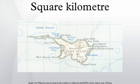1 km² is equal to 1 million m² and 100 hectares. It is also approximately equal to 0.3861 square miles and 247.1 acres. Conversely, 1 m² equals 0.0000001 km², 1 ha equals 0.01 km², 1 square mile equals 2.5899 km², and 1 acre equals about 0.004047 km².